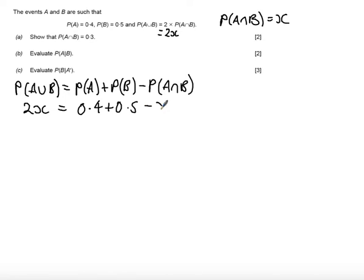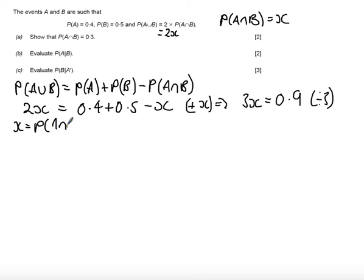So if I add X to both sides, I get that 3X equals 0.9, and then dividing by 3, we get that X, which equals probability of A intersect B, equals 0.3 as required.